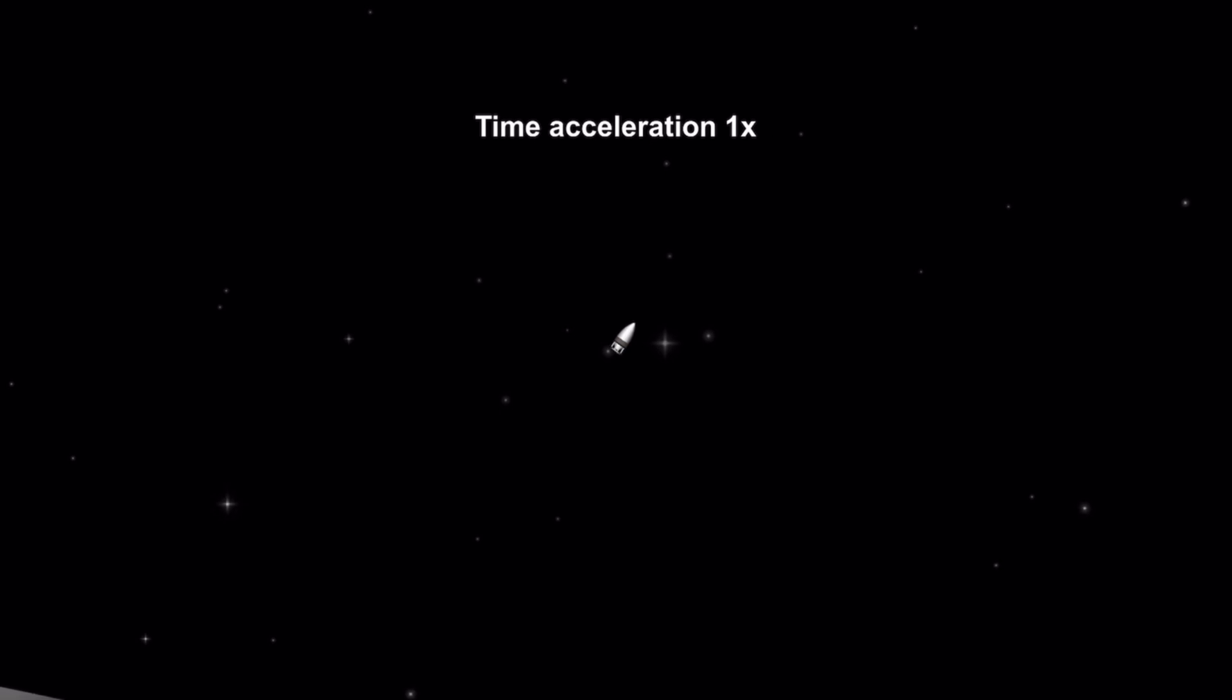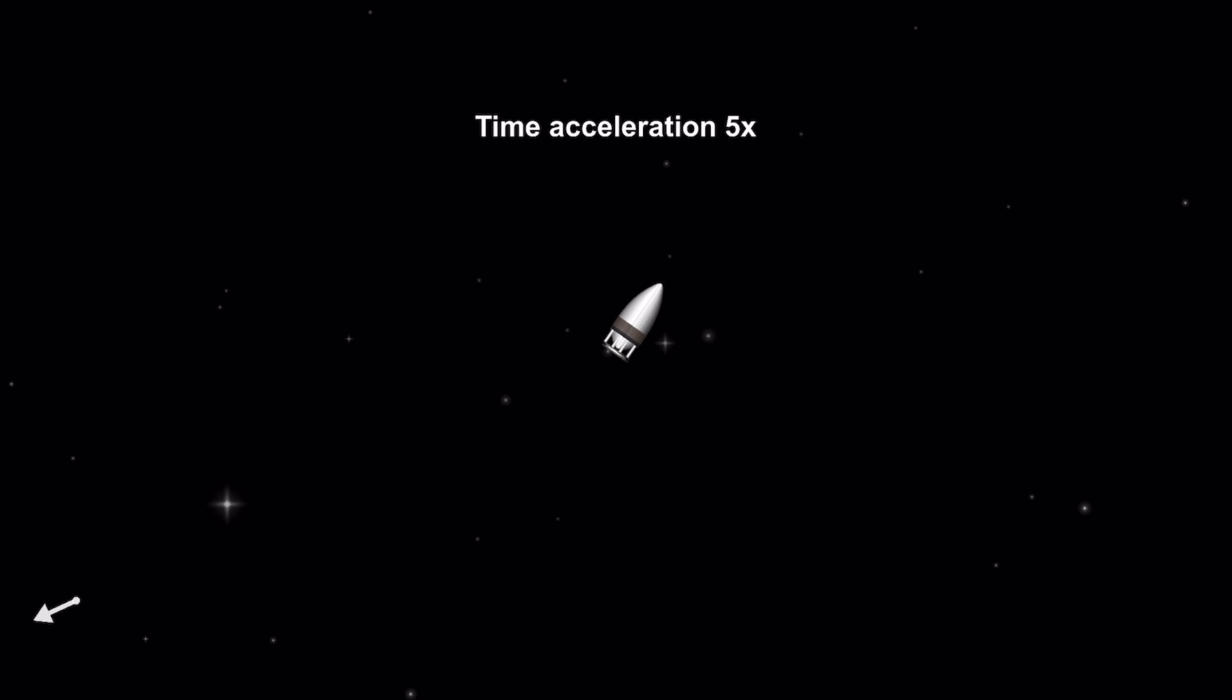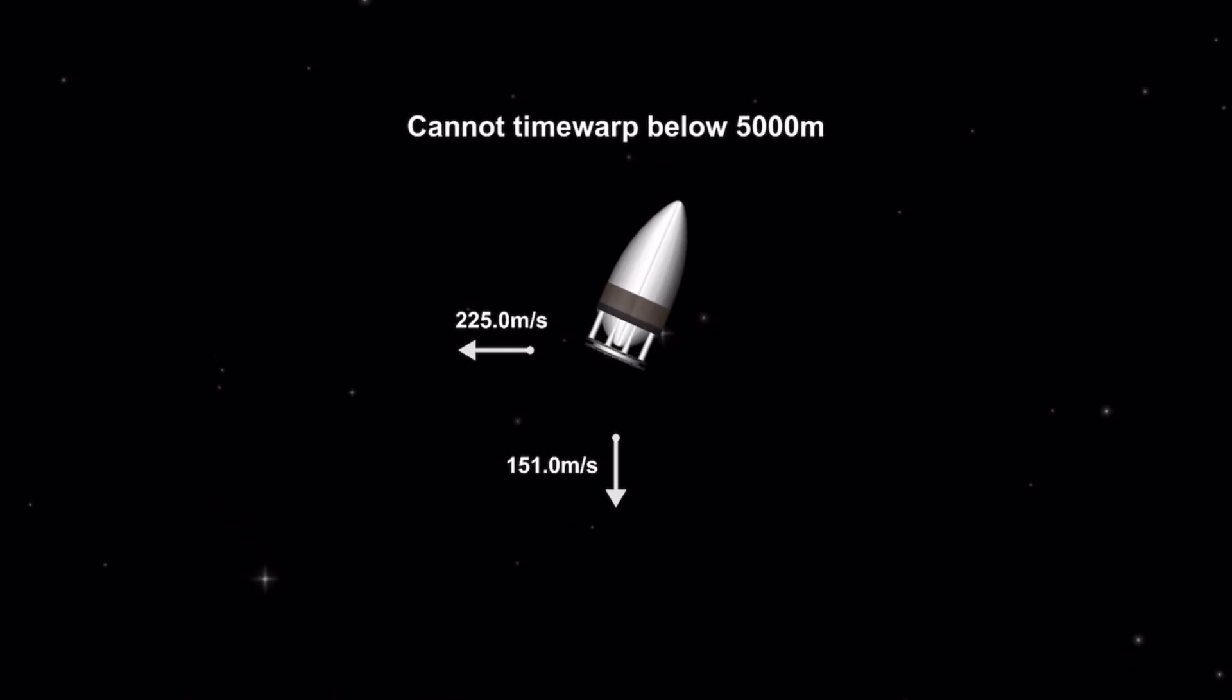And yeah, I changed the orientation of the rocket and we are coming for landing. Okay, so it's coming down fast and I had to slow it down with the two rocket engines, Hawk engines. And yeah, we had to just wait until it slows down enough and it lands on the moon.